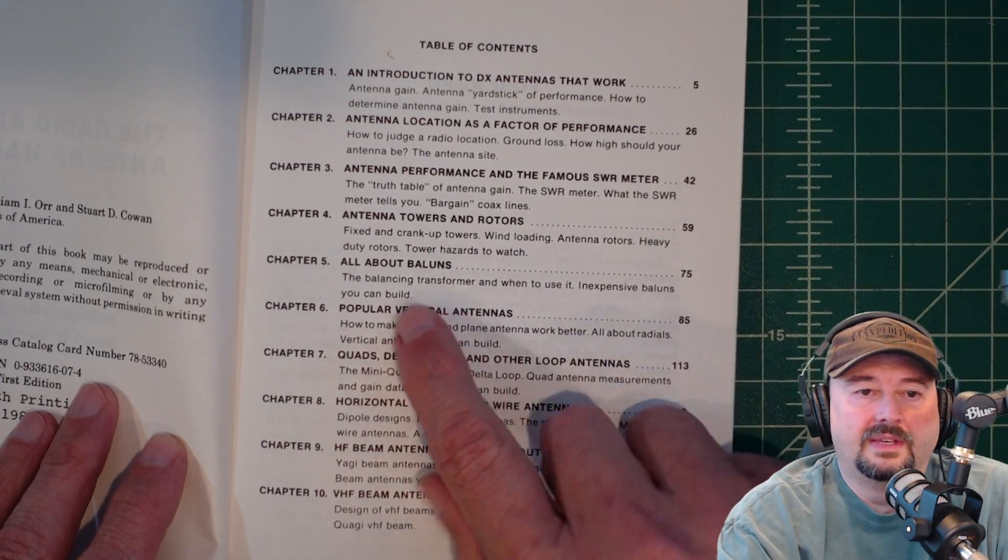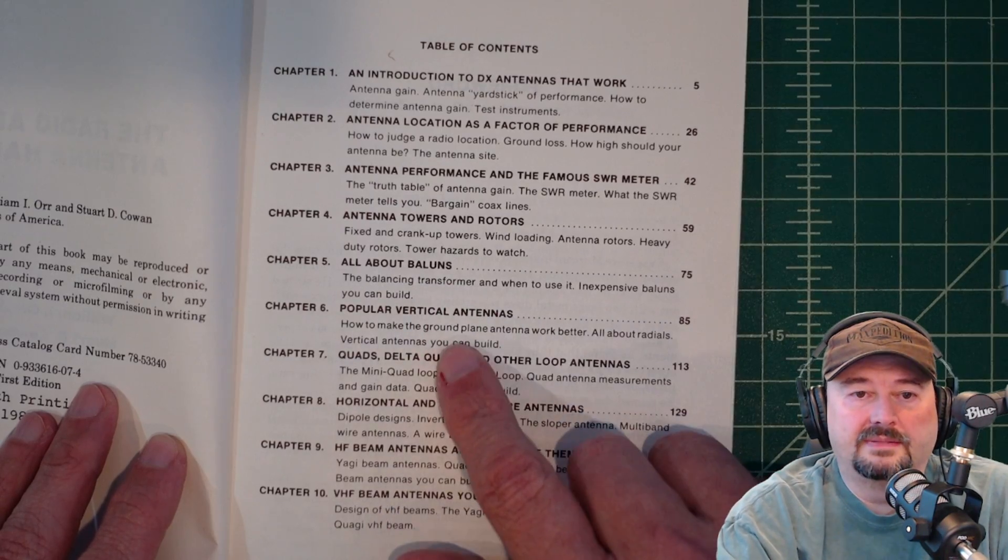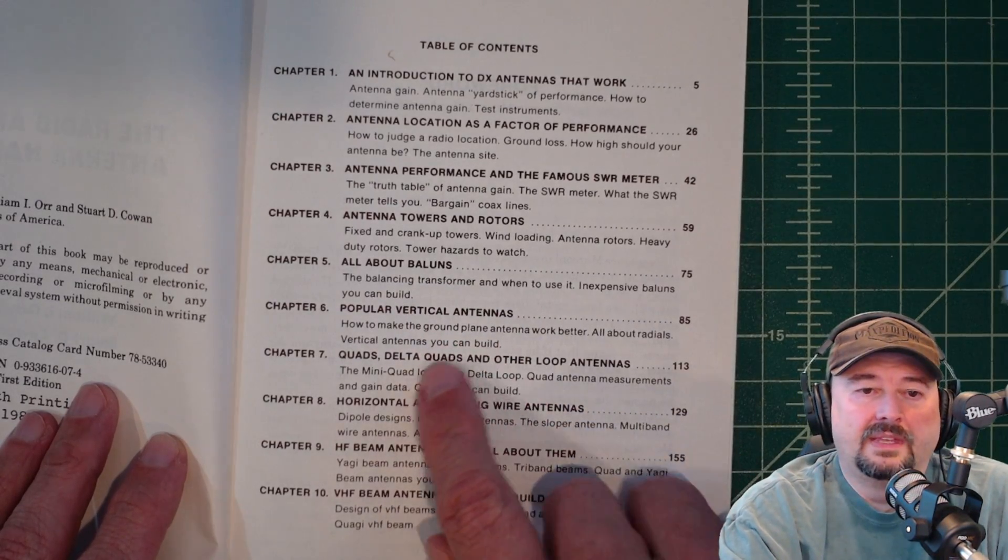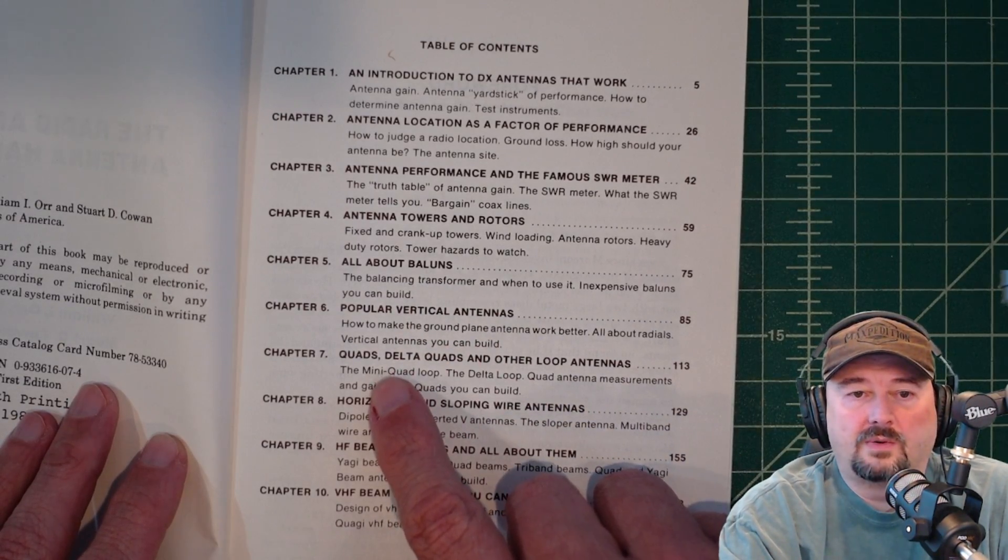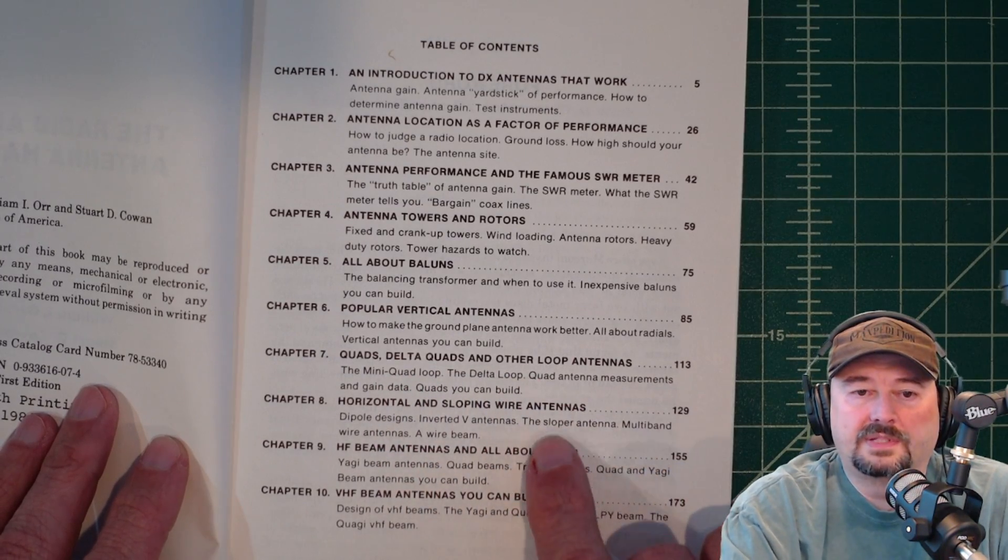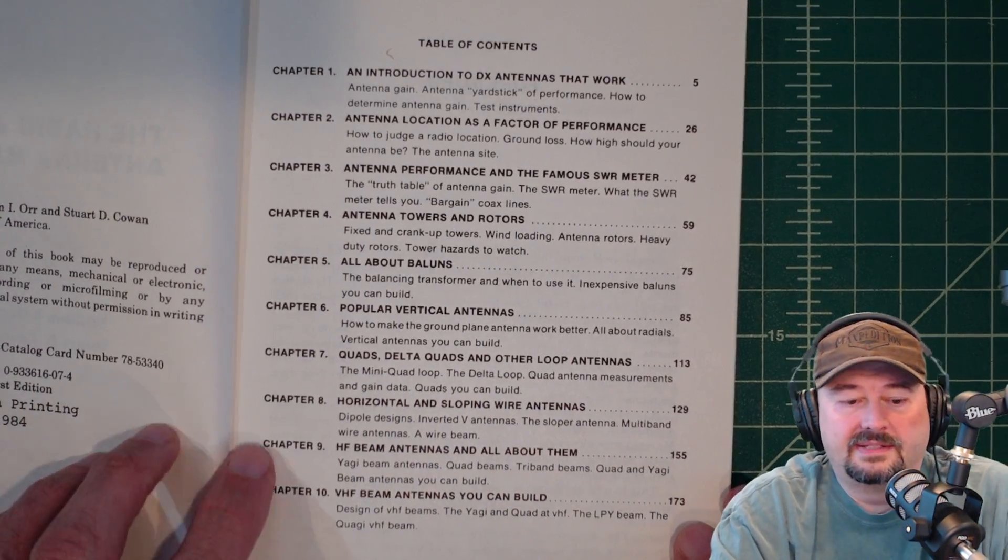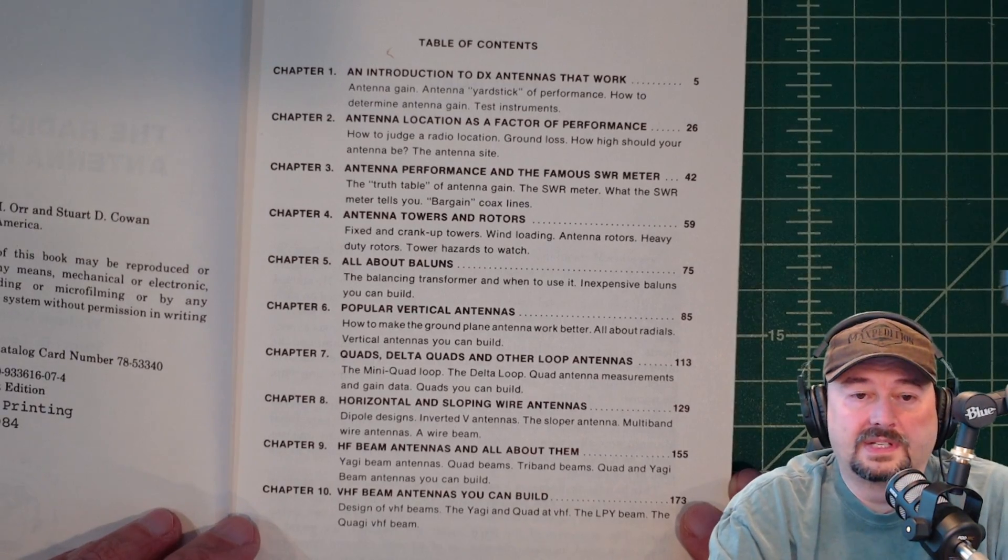Antenna towers and rotors, my favorite chapter, all about balance, popular vertical antennas. He goes into some information about quads, delta quads and other loops, horizontal and sloping wire antennas, and that's where they talk about NFED half waves, which I like.